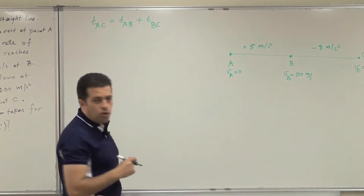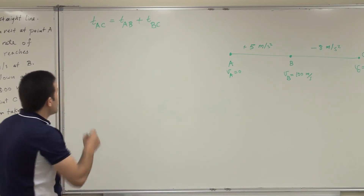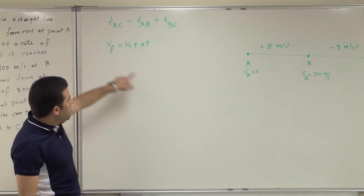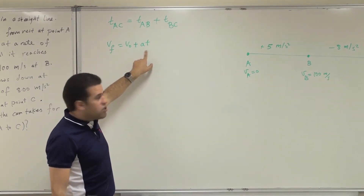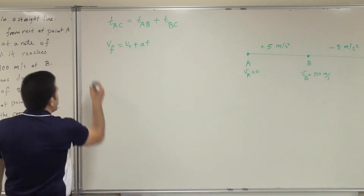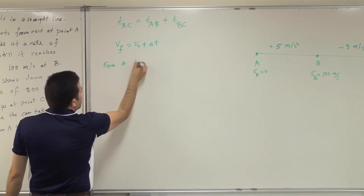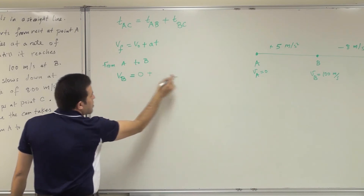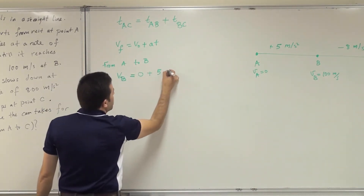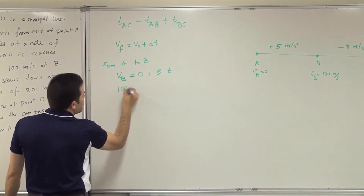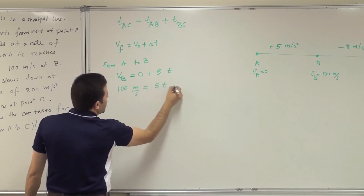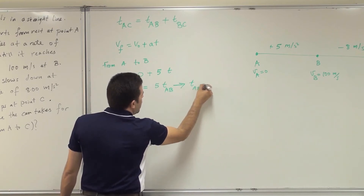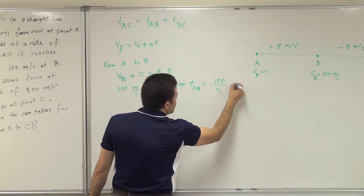For the first stage, the most appropriate equation is v-final equals v-initial plus A times T, since I have initial and final velocities and acceleration. From A to B: v-final at B equals v-initial at A, which is 0, plus 5 multiplied by T. So 100 equals 5T, giving T from A to B equals 100 divided by 5, which is 20 seconds.